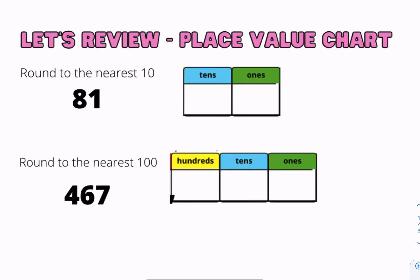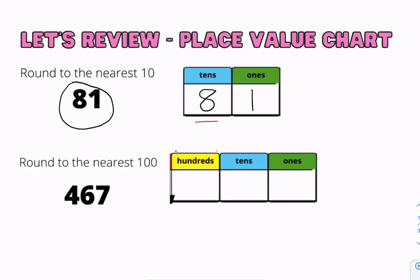Let's go ahead and review some of these examples using a place value chart. First example: round to the nearest 10, we have the number 81. The first thing you want to do is place your numbers on your place value chart. Next, you want to underline the 8 since we're rounding to the nearest 10.